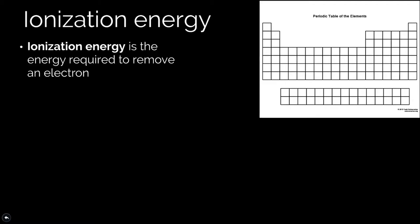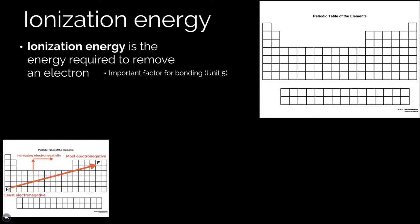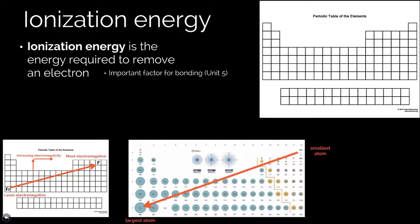Finally, we're moving into ionization energy. Ionization energy is how much energy it takes to remove an electron from an atom. It's a very important property for chemical bonding, and we'll revisit this in more detail in unit five. Notice that it goes very much hand in hand with electronegativity. While electronegativity is the ability to hold on to electrons, ionization energy is the opposite — it's how much energy is required to take an electron away. Both electronegativity and atom size play a big role in determining how much energy it takes to remove an electron.